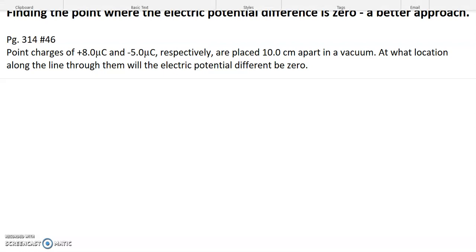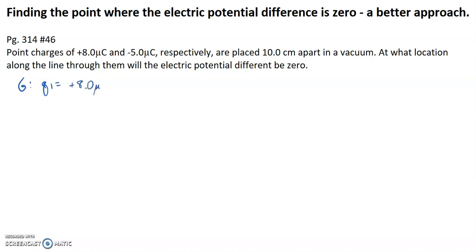The first thing to note is what we're given: q1 is plus 8 micro coulombs, q2 is negative 5 micro coulombs, and r is 10 centimeters. I'm going to keep these in micro coulombs and centimeters because when we rearrange the equations, the units cancel out — we do not need SI units since they will be divided by the same thing on top and bottom.